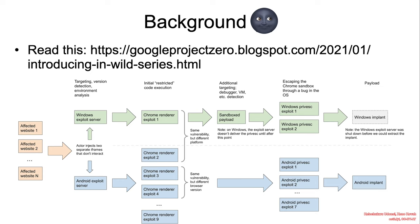The vulnerability itself was part of an exploit chain that created a watering hole attack leveraging a Chrome vulnerability, Android OS vulnerabilities, and a Windows vulnerability. This particular vulnerability was required to escape the Chrome sandbox.